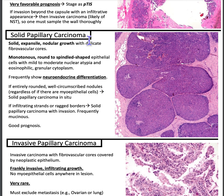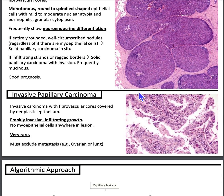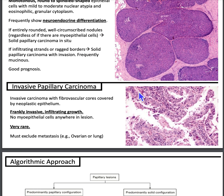Solid papillary carcinoma has a good prognosis. Lastly, invasive papillary carcinoma is invasive carcinoma with fibrovascular cores covered by frankly neoplastic epithelium. It looks frankly invasive with infiltrating growth and no myoepithelial cells anywhere in the lesion. It is very rare, and if you see one, you have to exclude metastasis — for instance from the ovary or the lung.